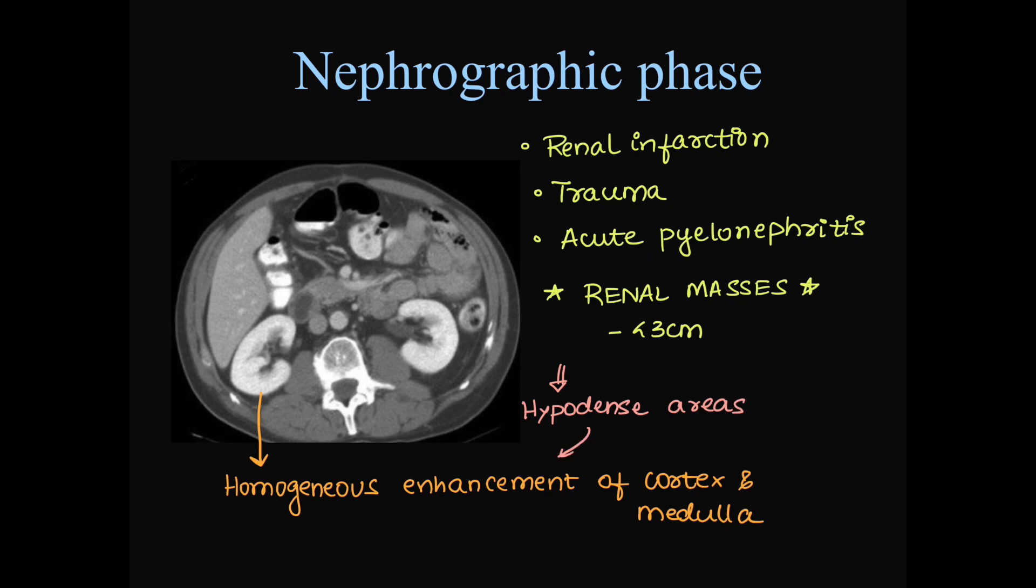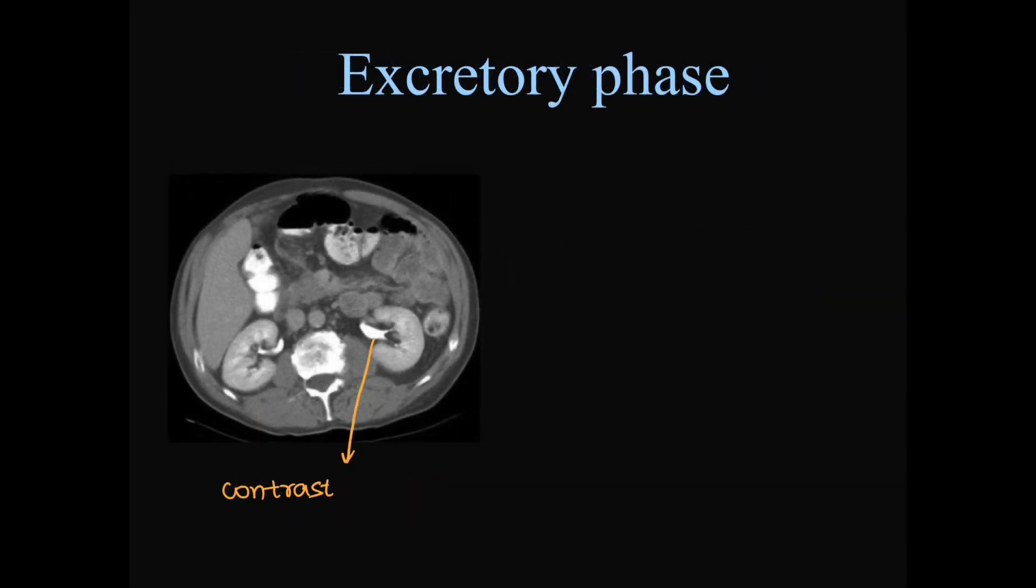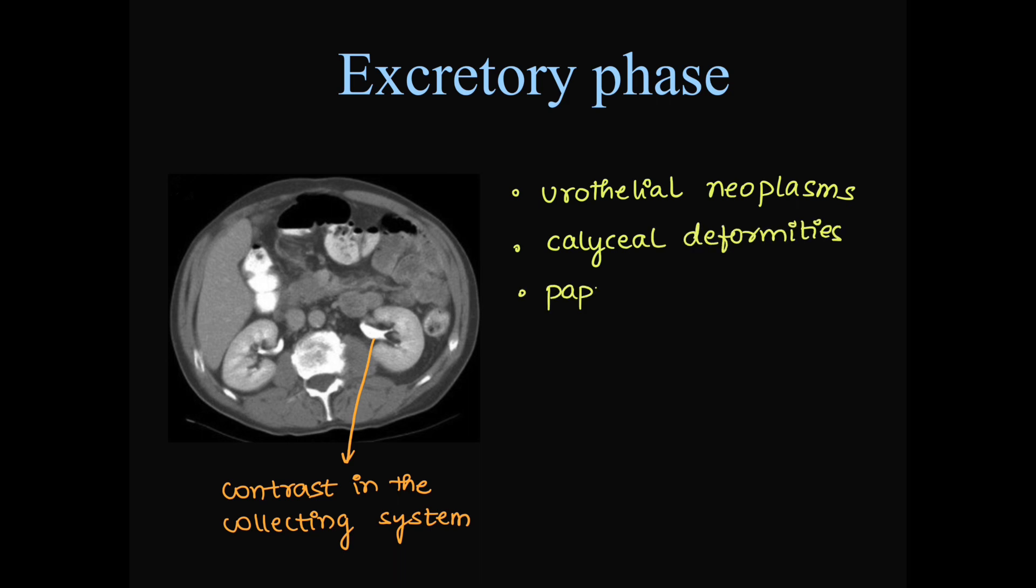In excretory phase, we can see that contrast has already reached the collecting system or the urinary tract. Any urothelial neoplasms, calyceal deformities, papillary necrosis or strictures in the urinary tract, inflammatory lesions can be seen in excretory phase.